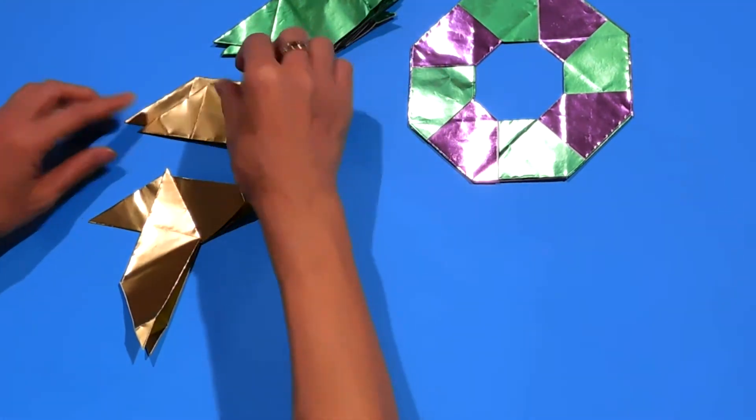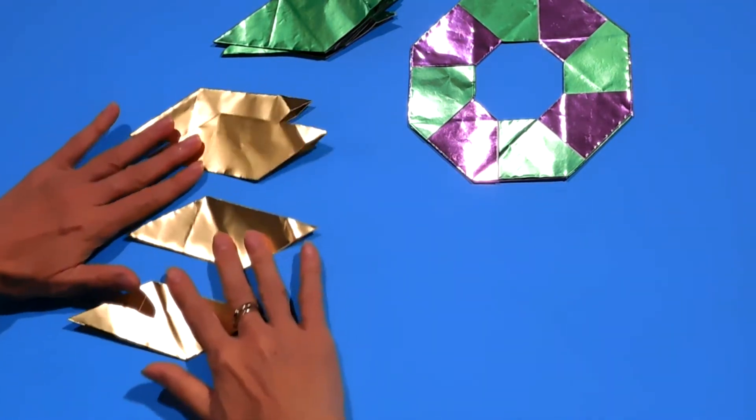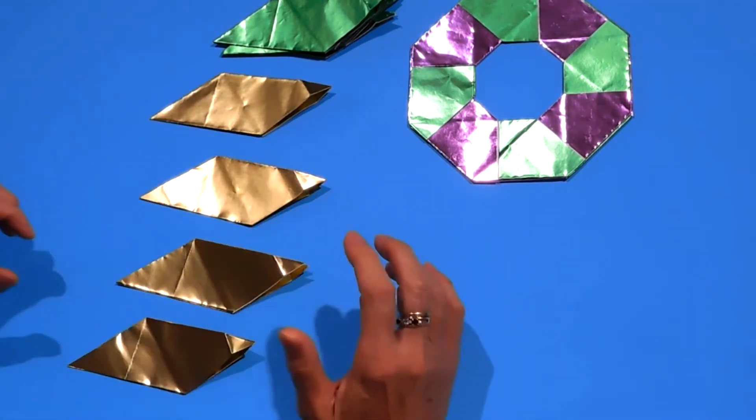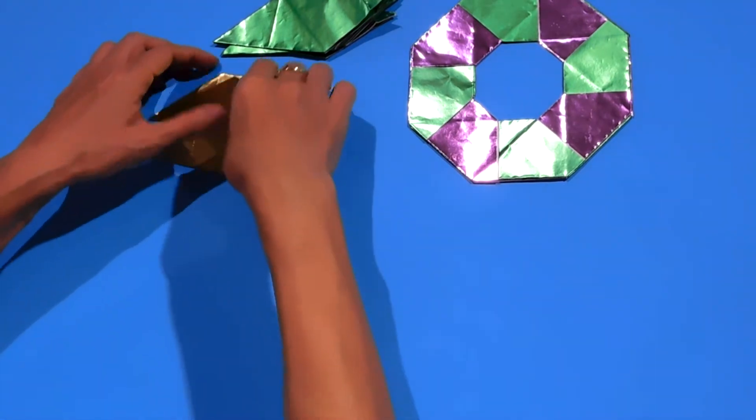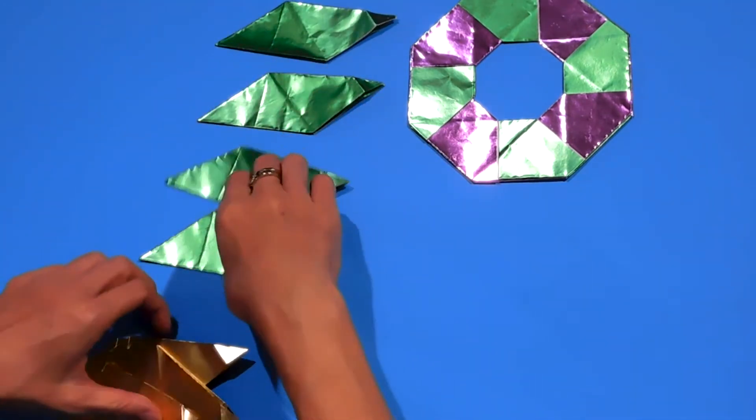And one, two, gold. Three, four. So what's important is, make four green ones in the same direction. One, two, three, four. So that makes eight.